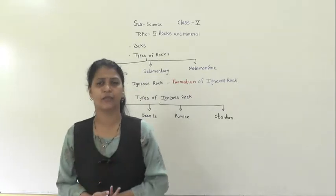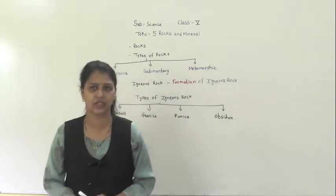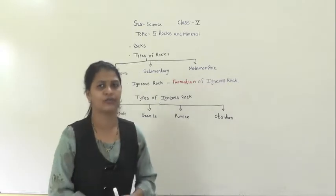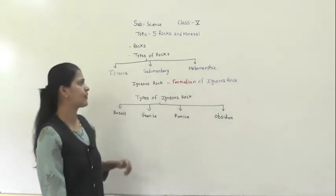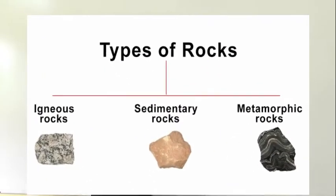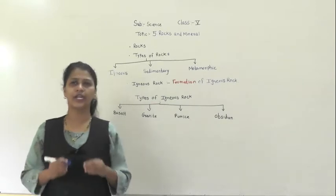How are the rocks formed? What is the formation of rocks — can you guess? In today's video we are going to learn the types of rocks and how rocks are formed. Rocks are mainly classified into three types: igneous, sedimentary, and metamorphic.